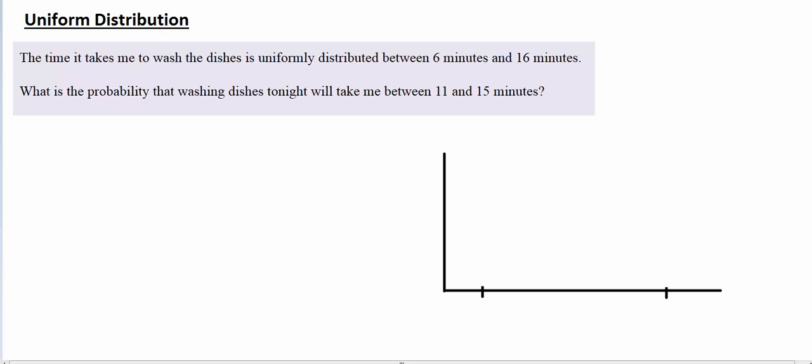A uniform distribution is a continuous distribution. Previously in this course, we've talked about discrete distributions. With discrete distributions, you can have two successes or three successes or four successes, but there's a discrete number of successes that you can have.